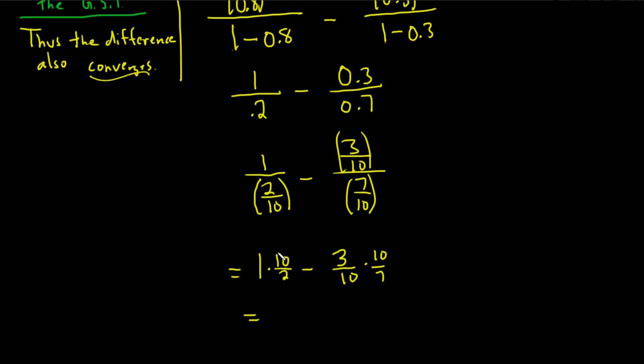This is equal to, let's see, 10 over 2 is 5, 1 times 5 is 5, so we get the number 5. Oh, a nice whole number. Minus 3 over 7.